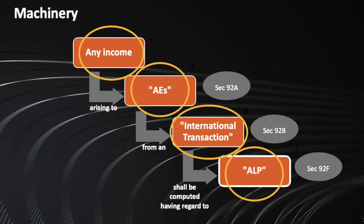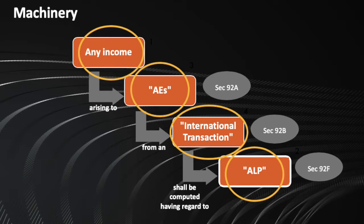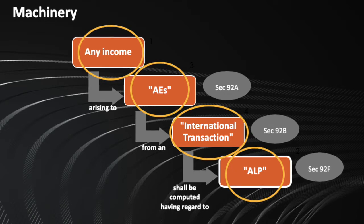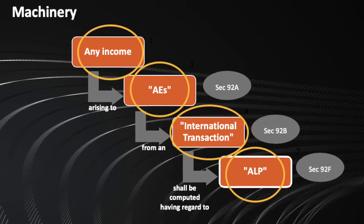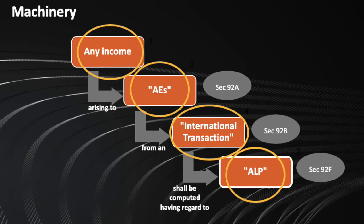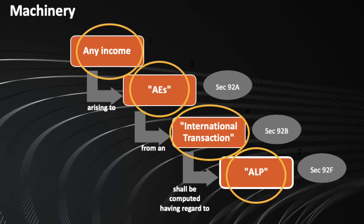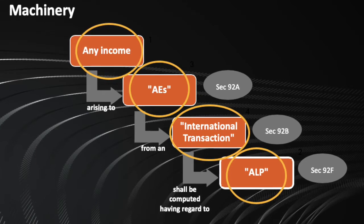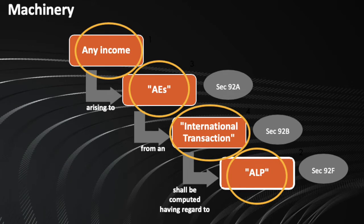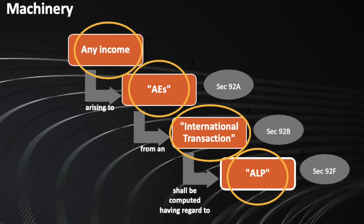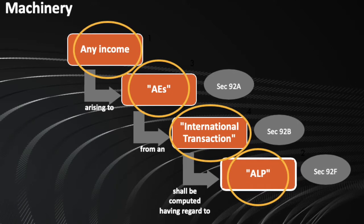These are the four important integral aspects which are necessary to undertake a transfer pricing analysis. There has to be an income which would be arising to the associated enterprises, in short we call them AEs, and such an income should be as a result of an international transaction which is undertaken between such associated enterprises, and such an international transaction should be computed and shall be necessarily computed having regards to the arm's length price.